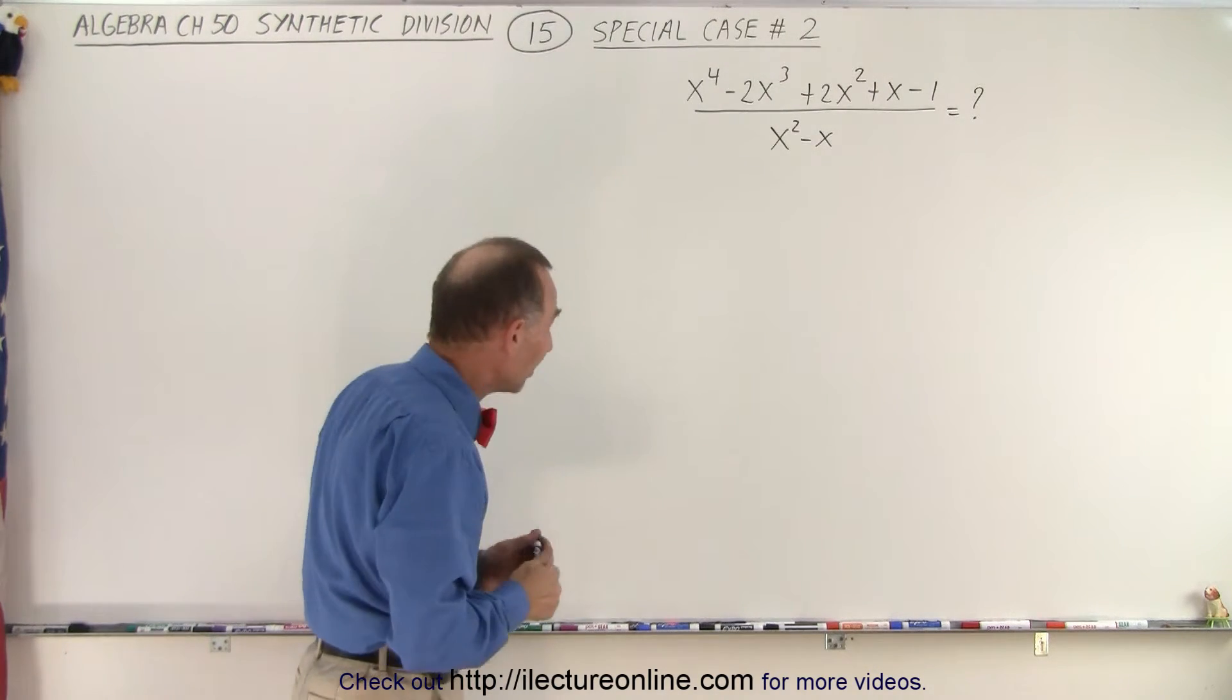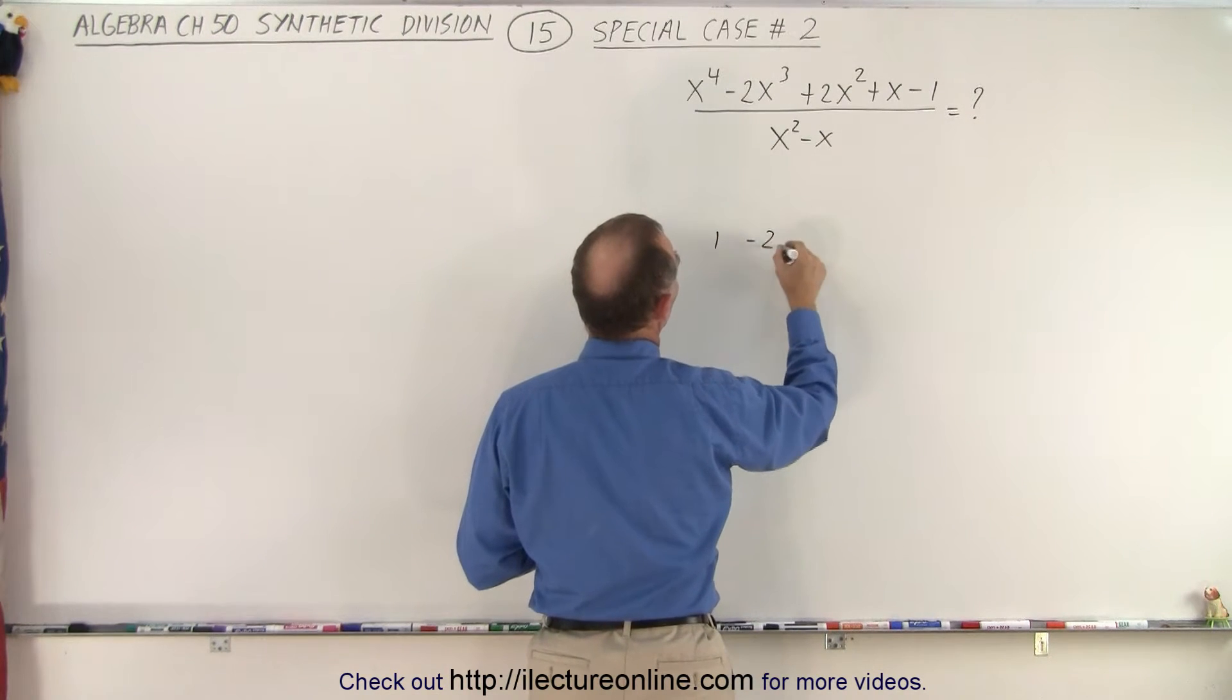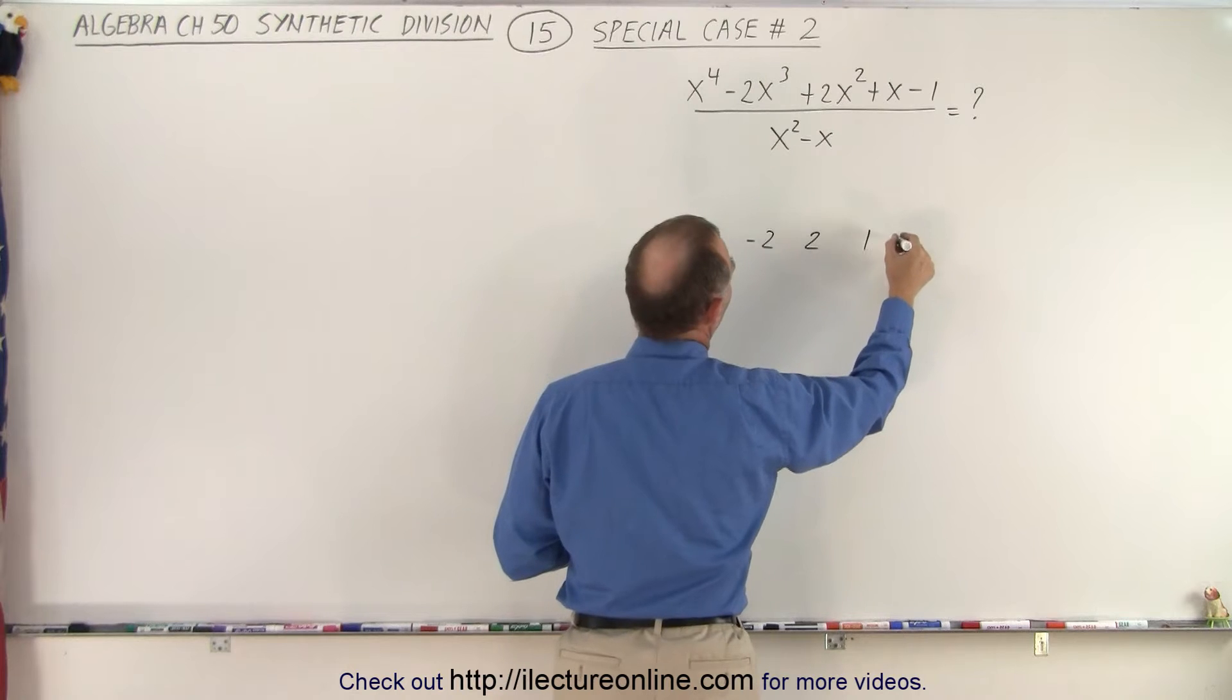All right, so we're going to set it up for synthetic division. We take the coefficients of the numerator and that becomes a 1, a negative 2, a 2, a 1, and a negative 1.